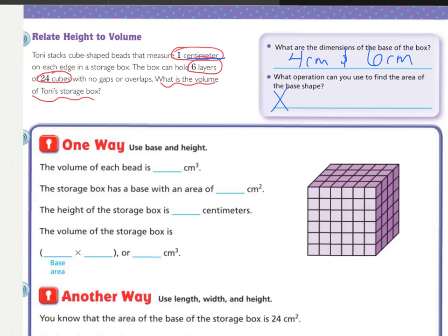And we used the operation of multiplication, and we did a length times width. So one way is to use base and height, and so with base they're just talking about the area of the base shape, which is a length times width. So the volume of each bead is 1 cm cubed, because it's a 1 by 1 by 1. The storage box has a base with an area of 24, because they told us that right here. It's 24 cubes, and so if we had a 6 by 4 by 1 layer, that would be the 24. So then what's the height of it? The height of it, they told us it was 6 layers, so that's 6 cm, because they're 1 cm boxes.